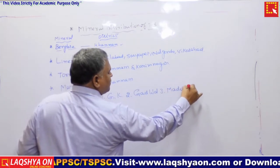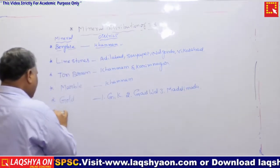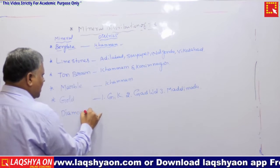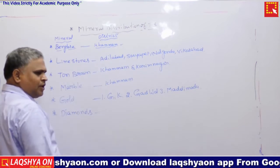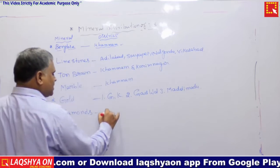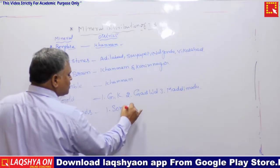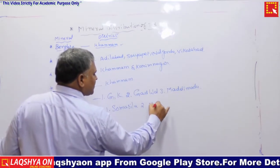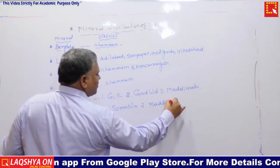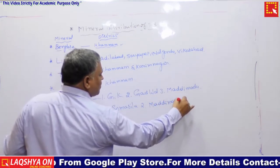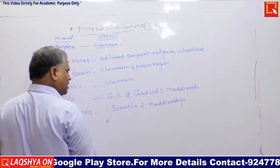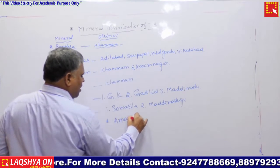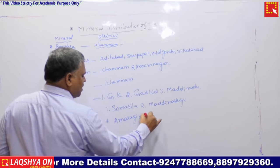Diamond reserves — not production — exist in Telangana at Somasila, Maddi Madugu, Amaregiri, and also Kollapur.